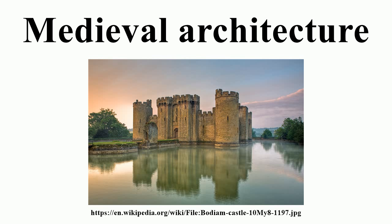Romanesque, prevalent in medieval Europe during the 11th and 12th centuries, was the first pan-European style since Roman imperial architecture, and examples are found in every part of the continent. The term was not contemporary with the art it describes, but rather is an invention of modern scholarship based on its similarity to Roman architecture in forms and materials. Romanesque is characterized by a use of round or slightly pointed arches, barrel vaults, and cruciform piers supporting vaults.